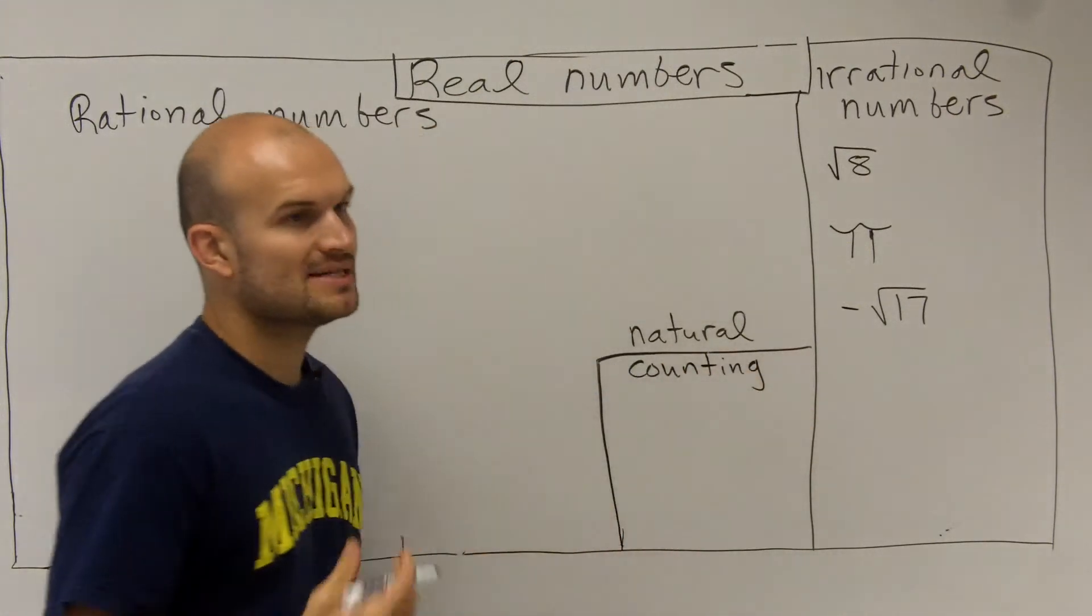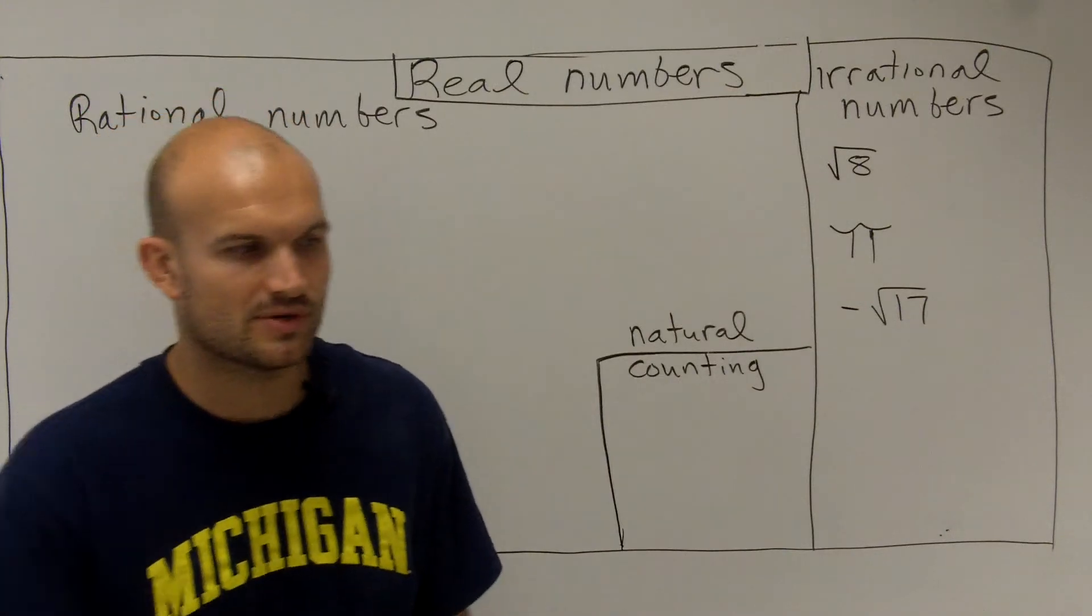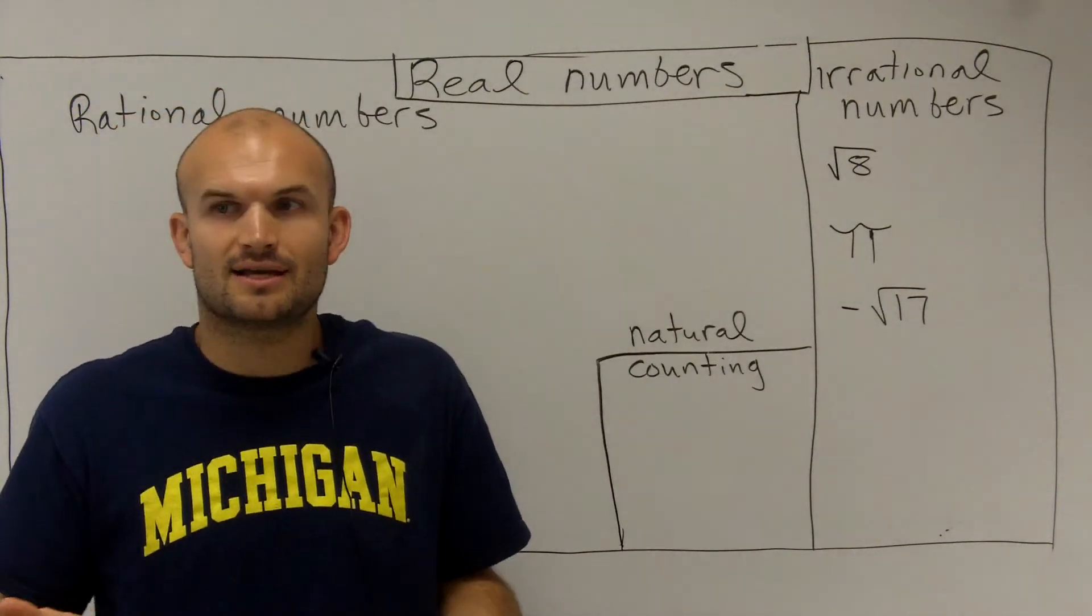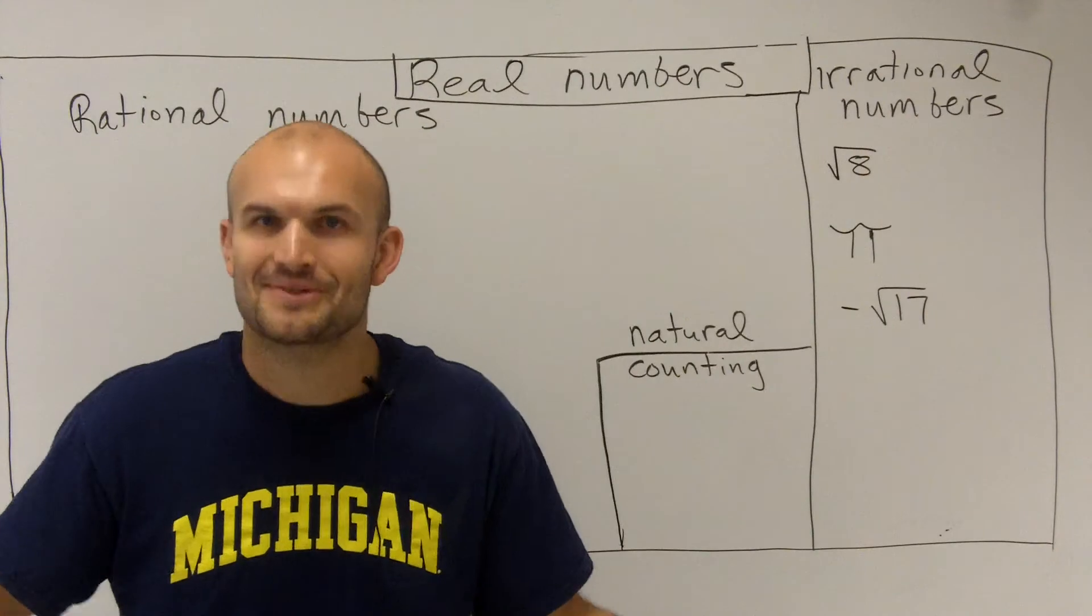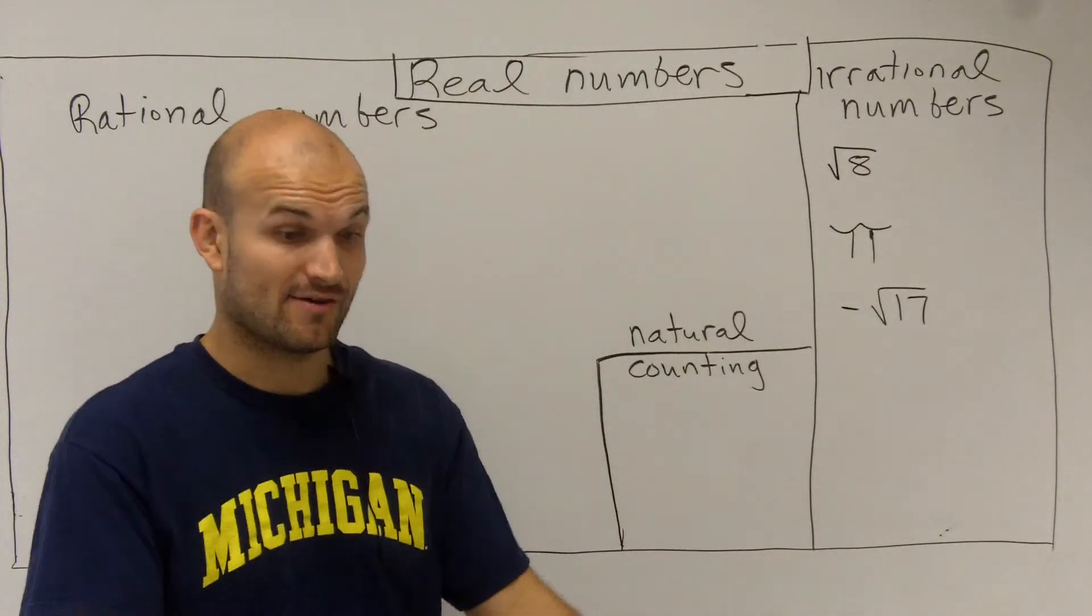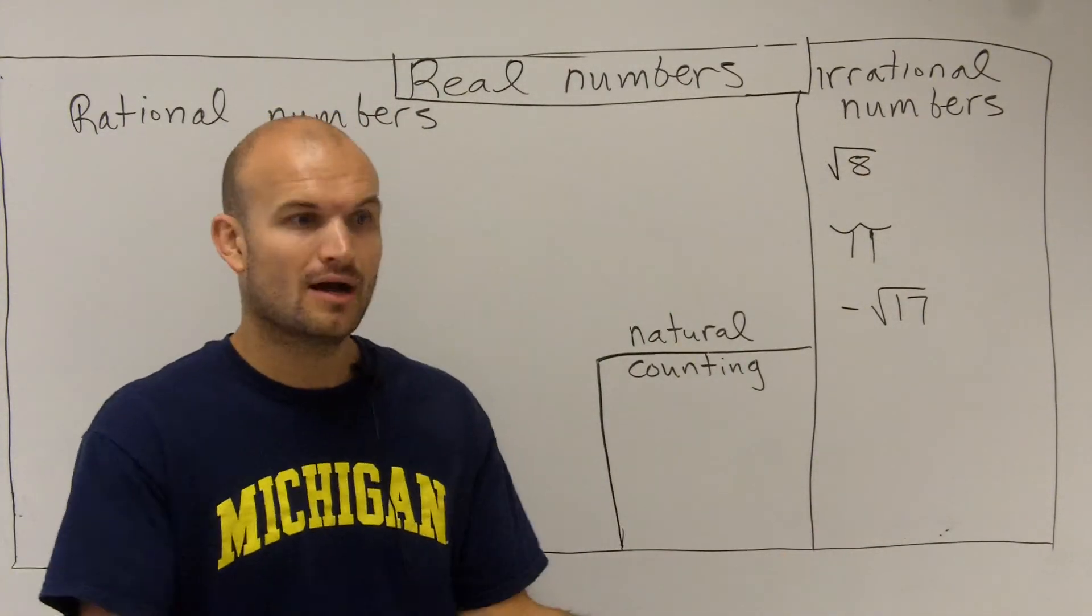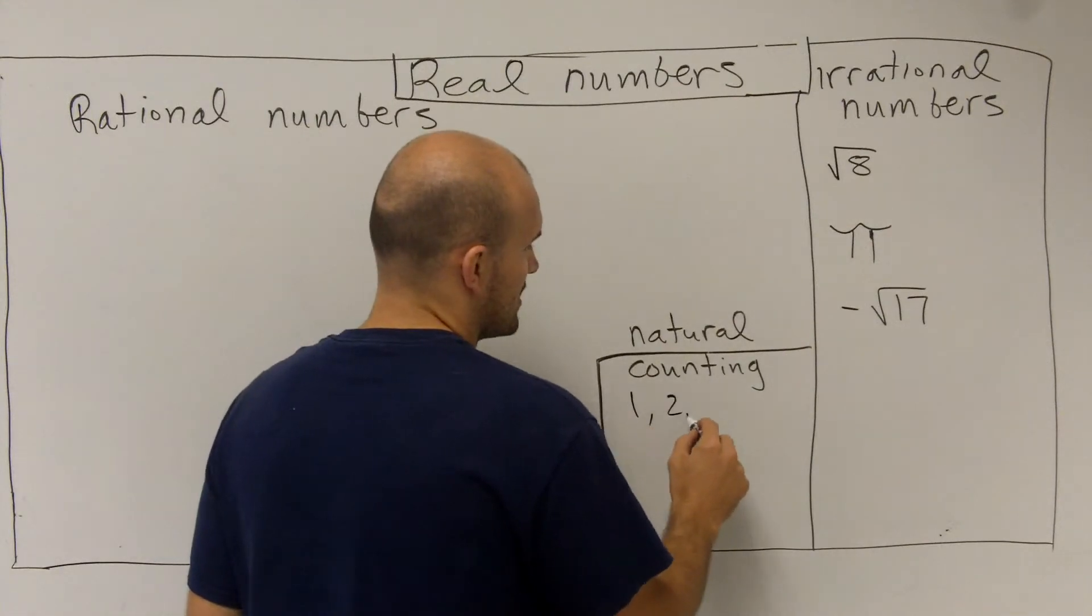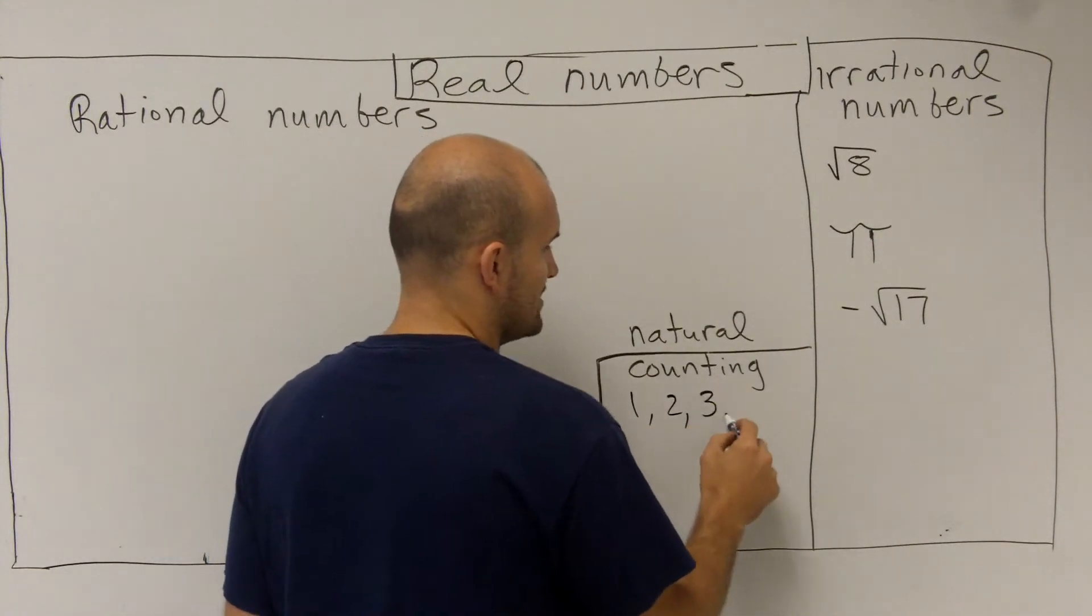The best way to describe these natural or counting numbers is to think about when you're looking at sticks on the ground. To make this really simple, you say: I have one, two, three, four, all that kind of thing. These numbers are what we call our natural or counting numbers.